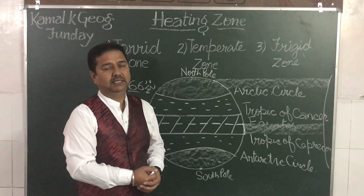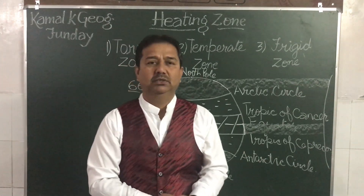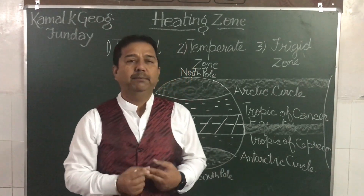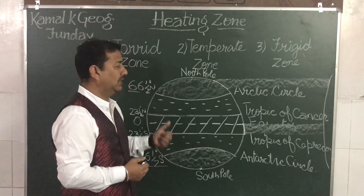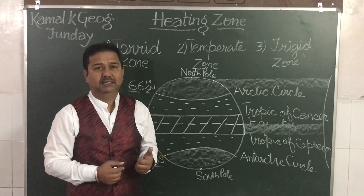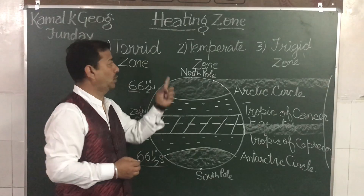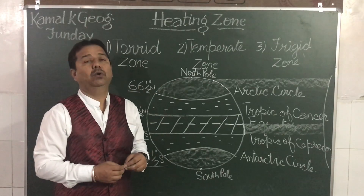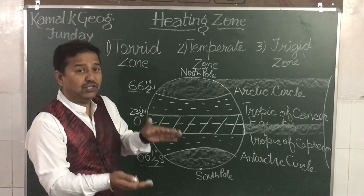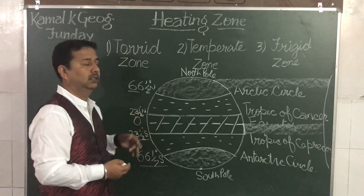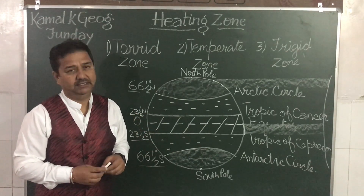In closing, I have a question: what is the region of the Torrid Zone, and between which latitudes do we find the Torrid Zone, where we have summers as well as winters?